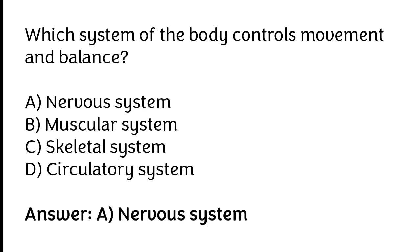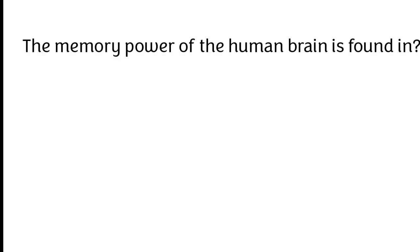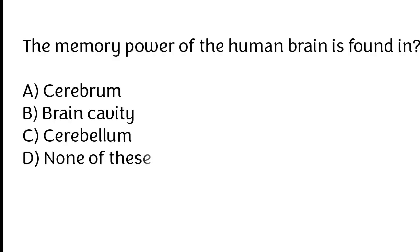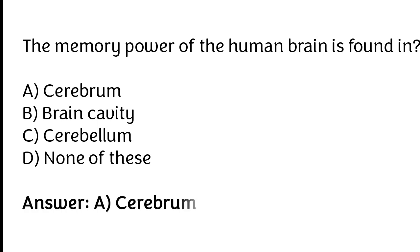The memory power of the human brain is found in: cerebrum, brain cavity, cerebellum, none of these. The correct answer is option A — the memory power of the human brain is found in the cerebrum.